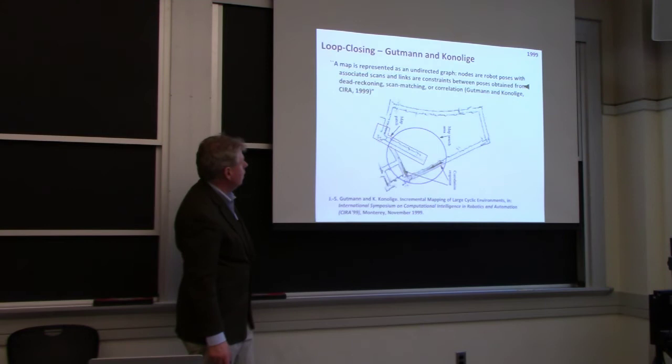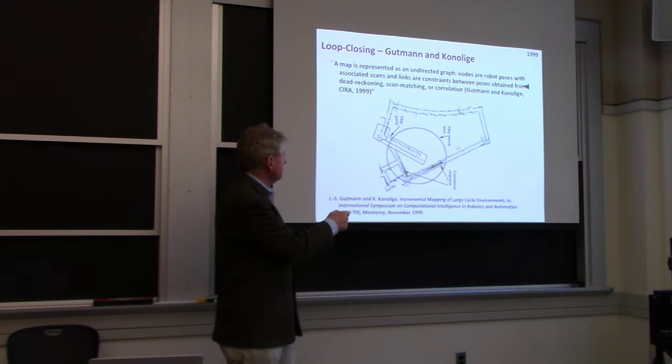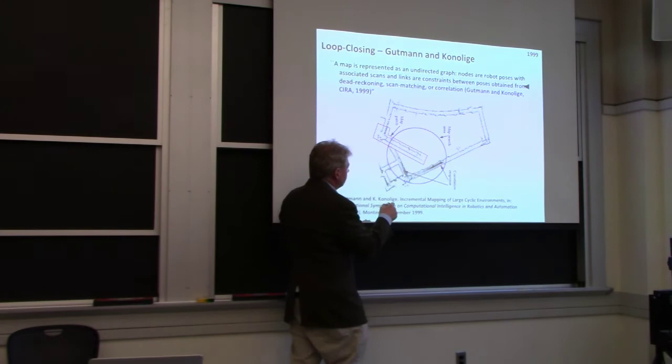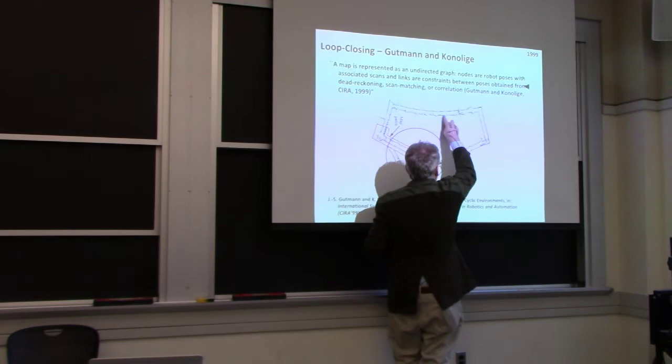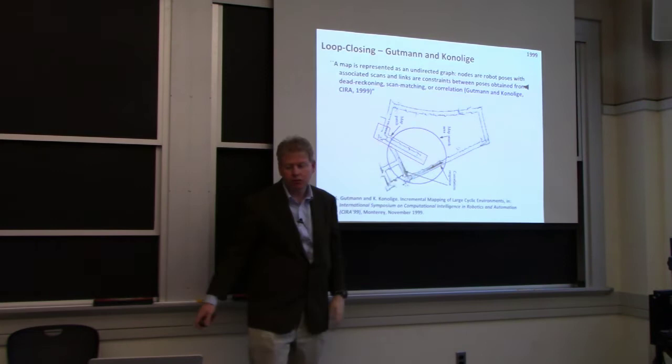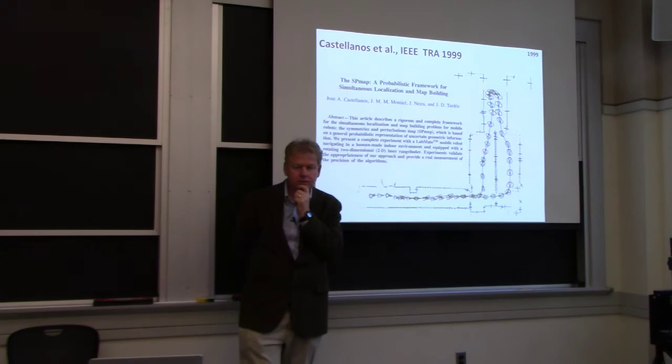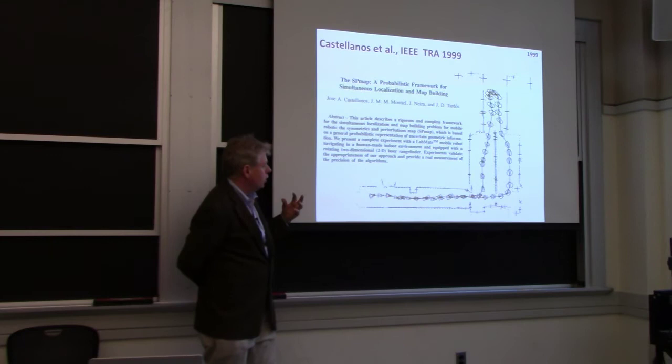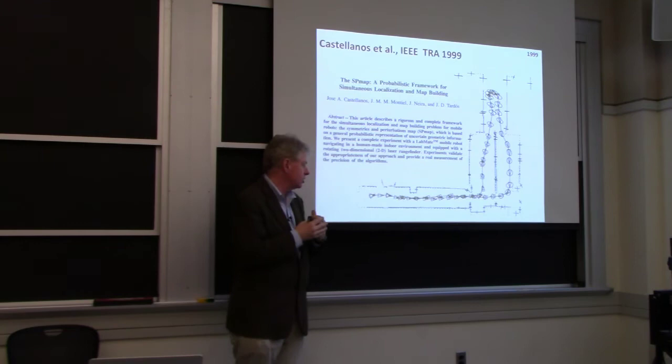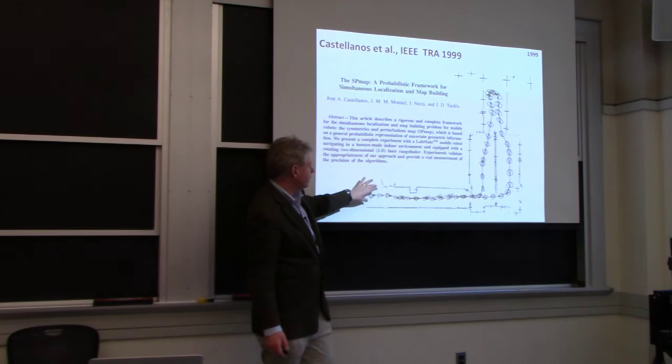The next big thing that came along was closing large loops. Kurt Konolige is a pioneer in SLAM. He, with Emilio and Stefan Gachter, developed a technique building on Lourakis and Emilio's approach that could deal with closing really large loops where you could correct the error. Here at MIT, I was very fortunate to have visitors from Spain — Castellanos and Tardos — who, coming from the geometric modeling tradition with careful representation of errors, really tried to think about consistency and data association from a more fundamental perspective.